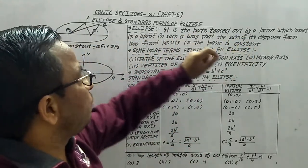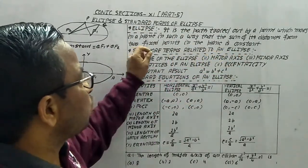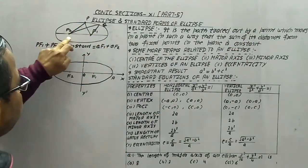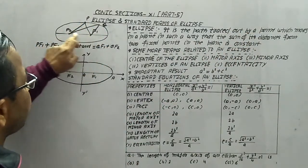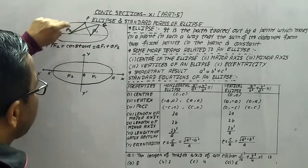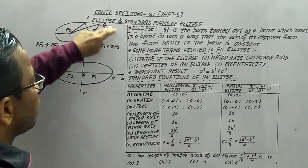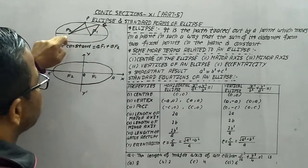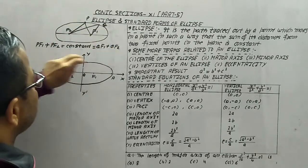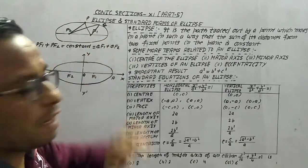An ellipse is the path traced out by a point which moves in a plane such that the sum of its distances from two fixed points in the plane is constant. We have two fixed points F1 and F2, and P is the moving point. If PF1 + PF2, and similarly QF1 + QF2, the sum of distances remains constant, then the path traced out is known as the ellipse.